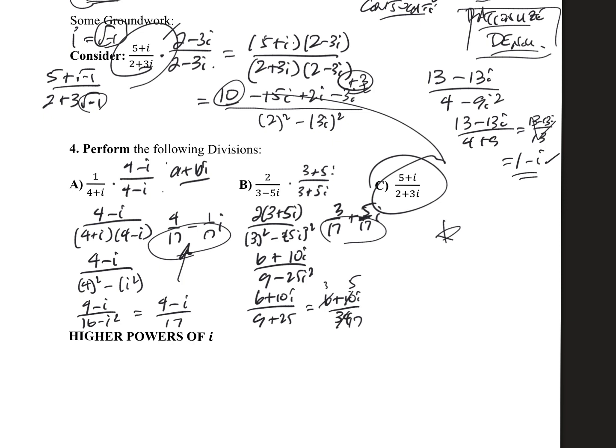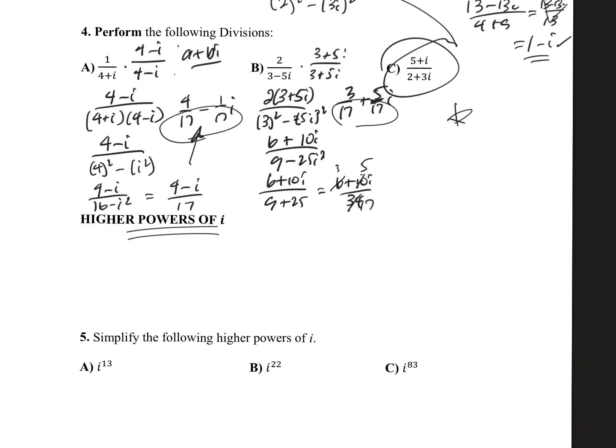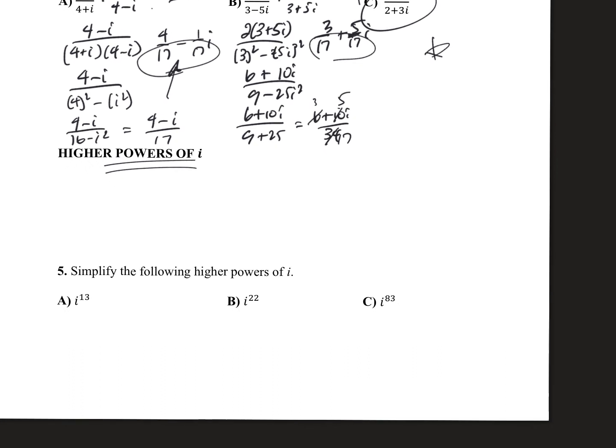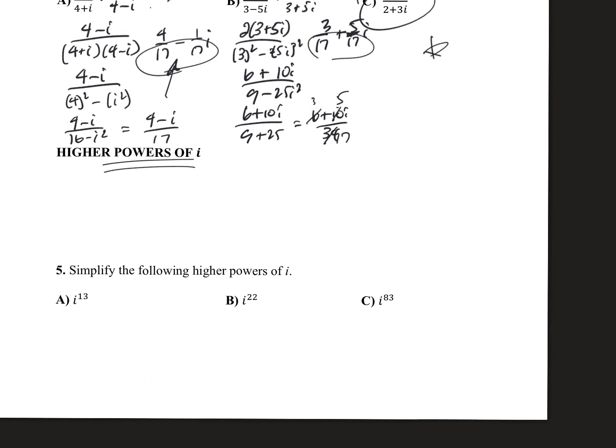As we're in this, there is a thing called higher powers of i. What I'm just going to do is just real quickly show you that because it kind of will end up going and showing this circular motion thing. So by definition, we know that i is the square root of negative 1.